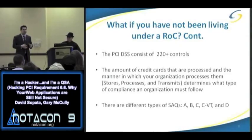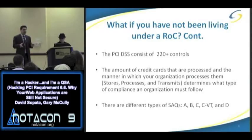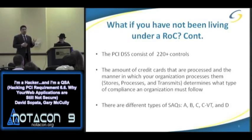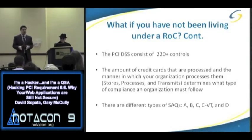So they created something called the SAQ A, B, C, and D. Depending on how you're actually processing your credit card information — whether through a card swipe machine, an e-commerce site, or internally at a retail environment with batch processing — those map to different SAQ types. If controls don't apply, you can significantly reduce your scope. Instead of doing all 220 controls, you may only have to do 20 or 40 depending on which SAQ applies. SAQ A is the least controls; SAQ D is the most.